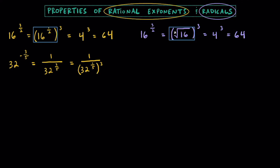We can multiply those powers together to get 3 fifths. At this point, you're going to think to yourself, what number raised to the 5th power gets you 32? And if you think about it, hopefully you can come up with the number 2. So 2 to the 5th power equals 32, so that means the 5th root of 32 is equal to 2. And then if you cube this 2, that's going to equal 8. So we're going to have 1 eighth for this value.